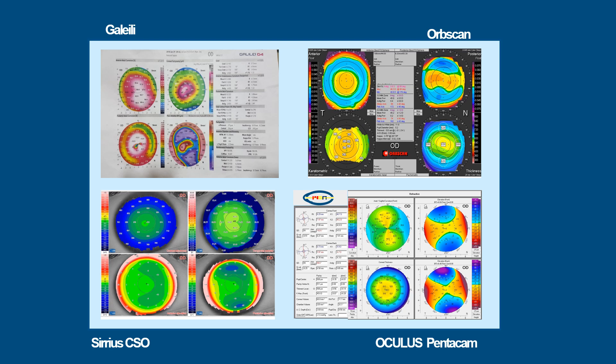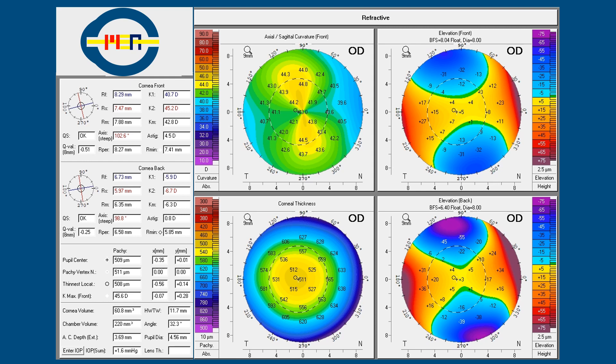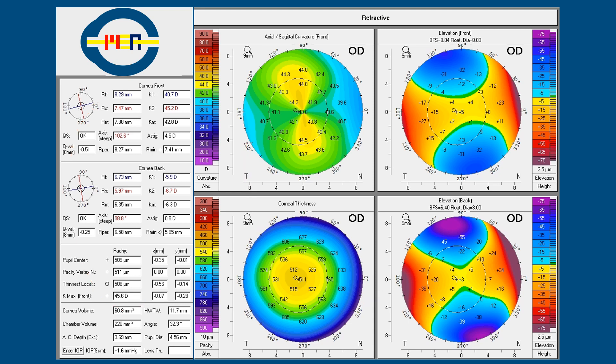These are the printouts from four different machines. I will pick just the values from one of the printouts and magnify it. It has got some parameters on the left-hand side and then the parameters on the maps. First, we will do the left-hand side ones.